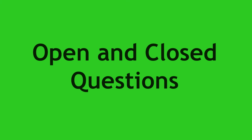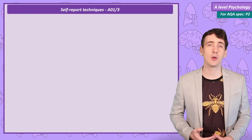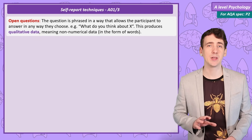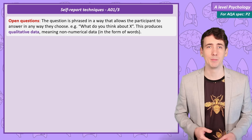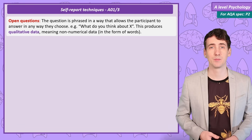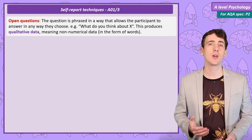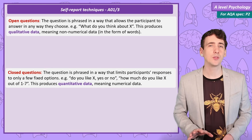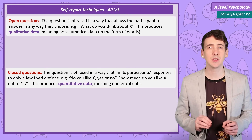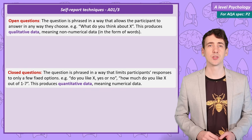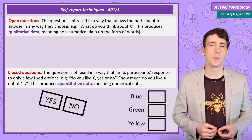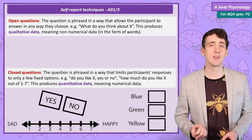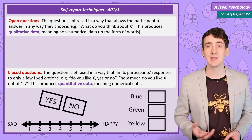Open and closed questions. Both questionnaires and interviews can use open or closed questions. An open question is one in which the participant is able to answer in any way they want — in a questionnaire there'll be a space to write the answer. Open questions give what's known as qualitative data, meaning data in the form of words. A closed question is when the participant has a limited number of options, for example just yes or no, a series of fixed choices, or points on a scale known as a Likert scale. This gives a type of data known as quantitative data — data in the form of numbers.